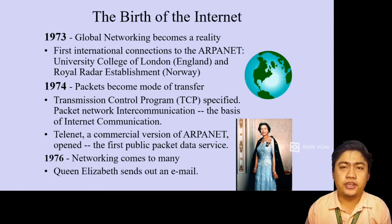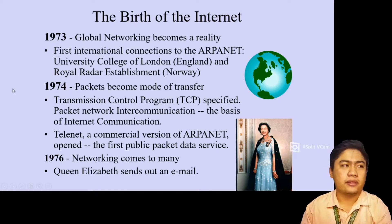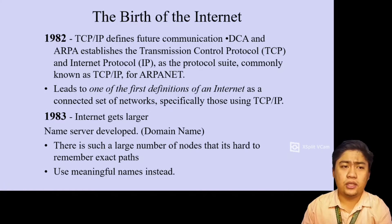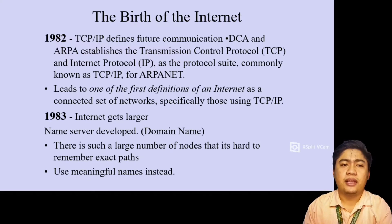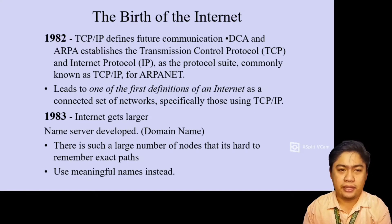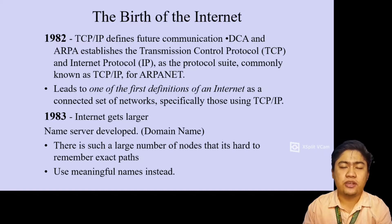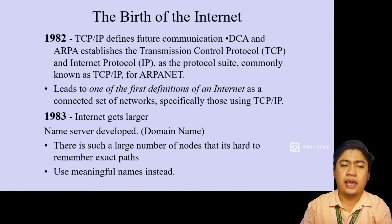In 1982, TCP and the Internet Protocol defined future communications. The DCA and ARPA established the Transmission Control Protocol and Internet Protocol — commonly known as TCP/IP — as the protocol suite for ARPANET. In 1983, the internet grew larger with the development of the domain name server, as there were now so many nodes that it was difficult to remember exact network paths.